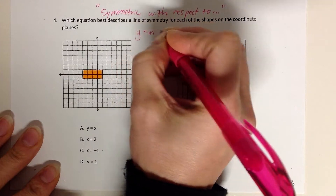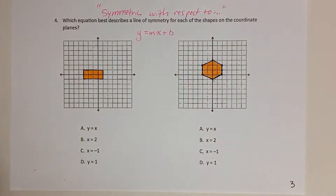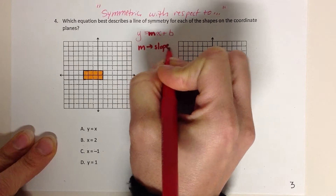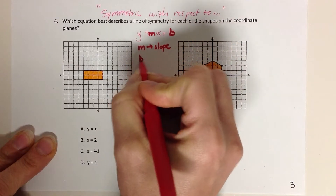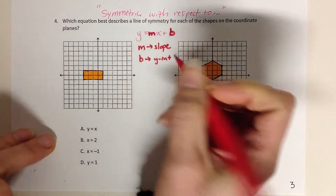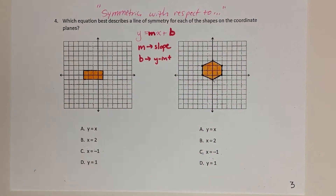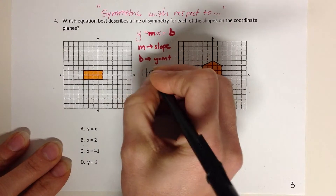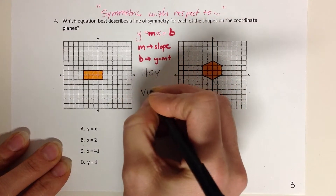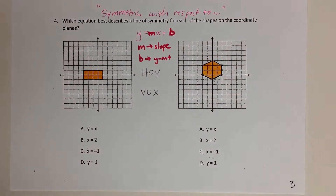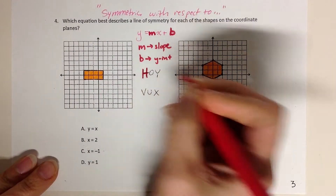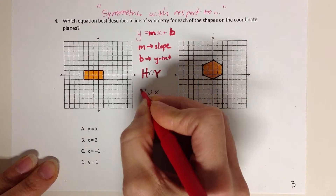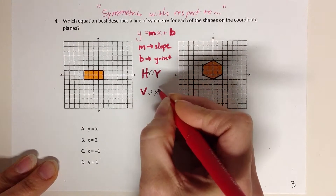When we have a linear equation, y equals mx plus b is the most common form, where m is the slope and b is the y-intercept. Now, depending on who your teacher was — I know a Mountain View teacher we used to have would teach HOY and VUX for the special cases. H is horizontal and has a zero slope with a y-equals equation. V stands for vertical lines that have an undefined slope and an x-equals equation.